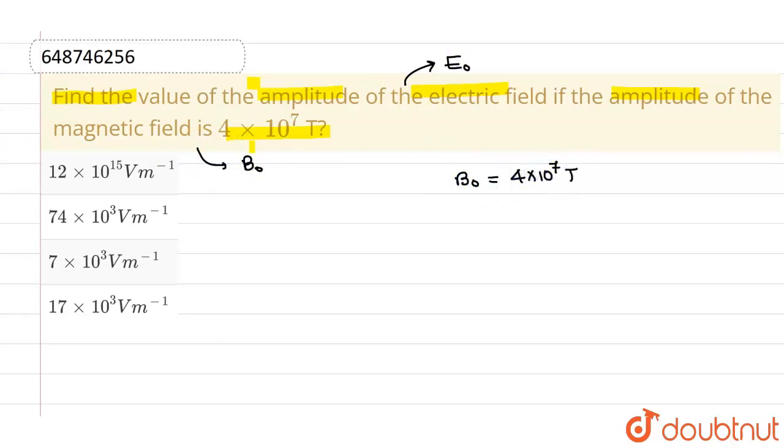Now we know a relation which relates the amplitude of electric field and amplitude of magnetic field. And this is given by E₀ = c×B₀, where value of c is 3×10⁸. And this represents the value of electromagnetic wave in vacuum.